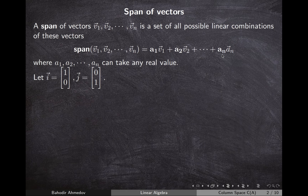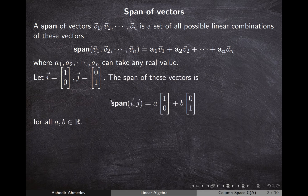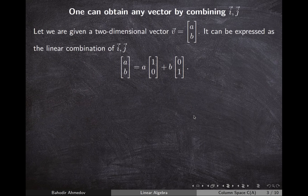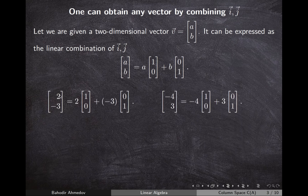For example, if i = (1, 0) and j = (0, 1), then the span of i and j is the set of all possible combinations a·i + b·j. By combining i and j, we can obtain any two-dimensional vector. So any vector with components a and b can be obtained as a combination of i and j — for instance (3, -3) or (-4, 3). That is why the span of i and j is the whole space of two-dimensional vectors.